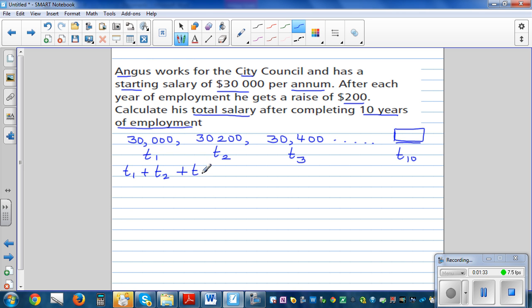Up to the salary of the tenth year, plus t9 plus t10. This is the question. So this basically means you have to find s10. S10 is what the question is, so the sum.